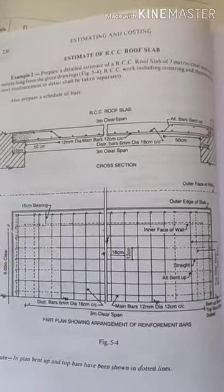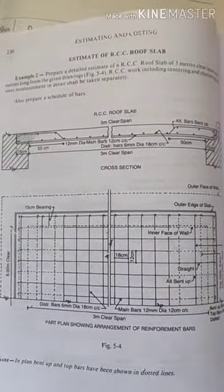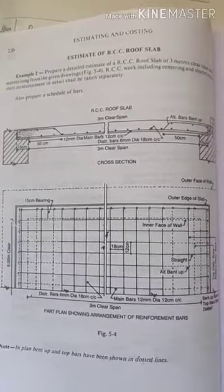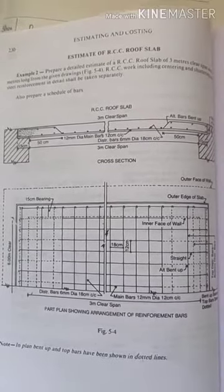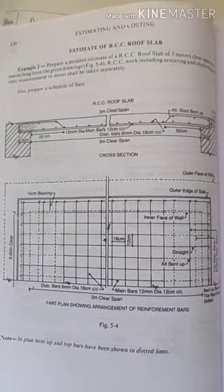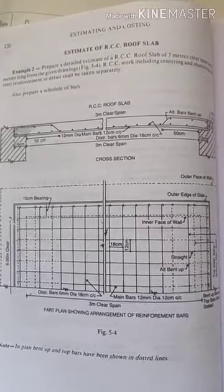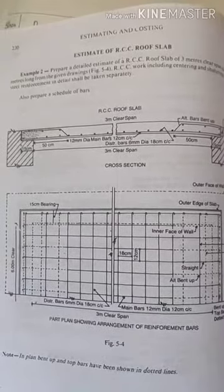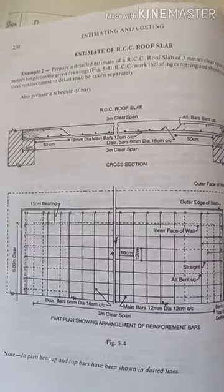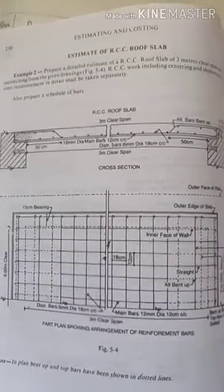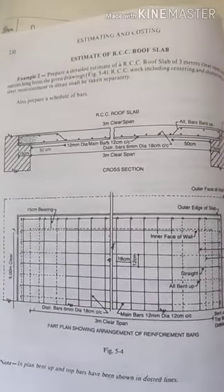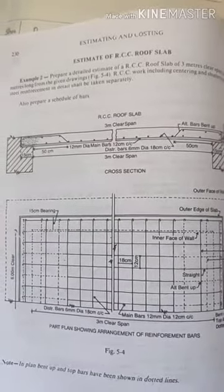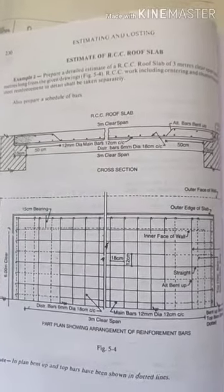Hello students, welcome back again. I hope you are clear with the previous video regarding finding out the unit weights of different diameters of bars for the given formula, that is d² by 162. Remember that formula and just substitute the values of different diameter bars and you will get the unit weight of steel.